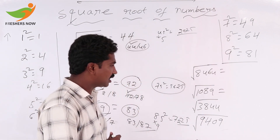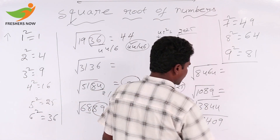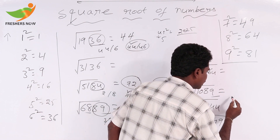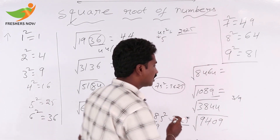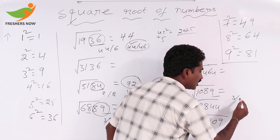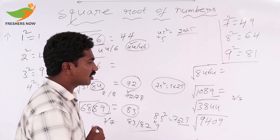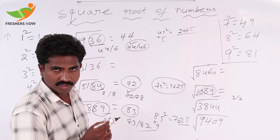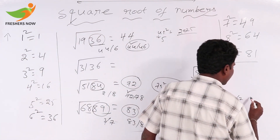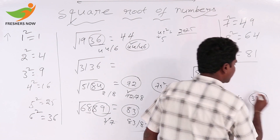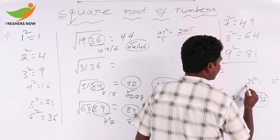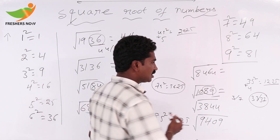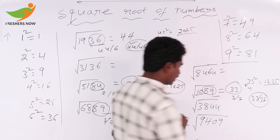Square root of 1089. Units place value is 9. 3 squared is 9 and 7 squared is 49, so we write 3 or 7. Keep 2 digits away: 10 is there. 3 squared is 9 and 4 squared is 16, so we take 3. The answer is either 33 or 37. In between these two, 35 is there. 35 squared: 5 squared is 25, and 3 times the next number 4 gives 12. Since 10 is less than 12, we take 33. Square root of 1089 is 33.